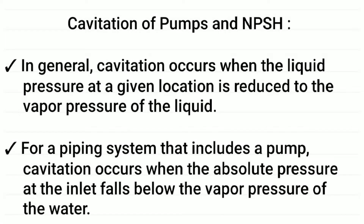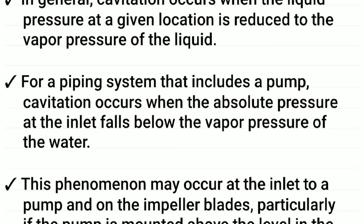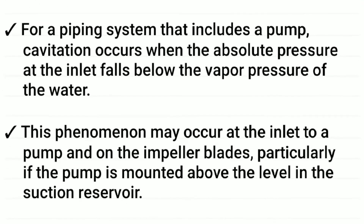Cavitation of pumps and NPSH. In general, cavitation occurs when the liquid pressure at a given location is reduced to the vapor pressure of the liquid. For a piping system that includes a pump, cavitation occurs when the absolute pressure at the inlet falls below the vapor pressure of the water.